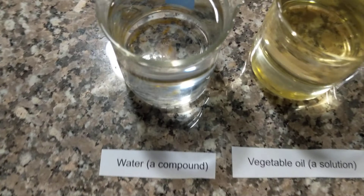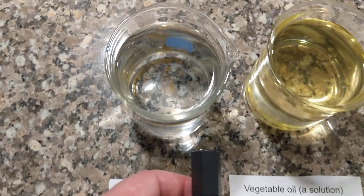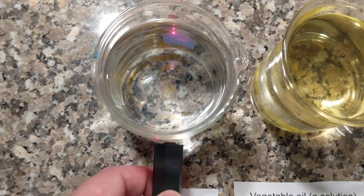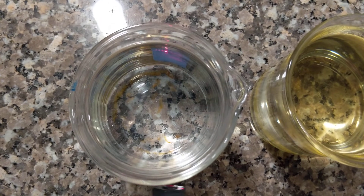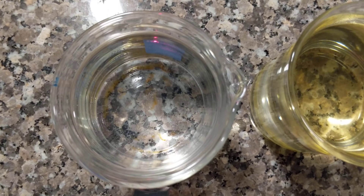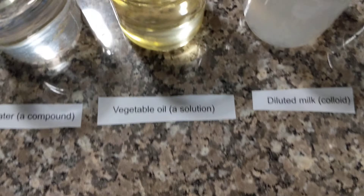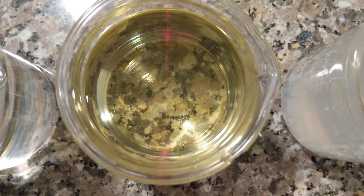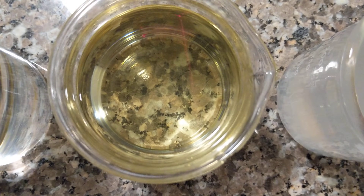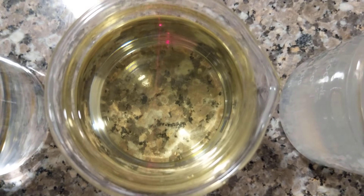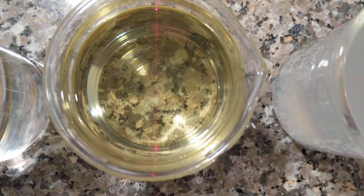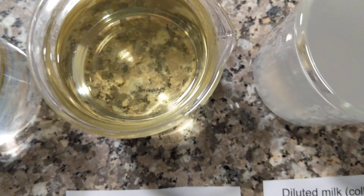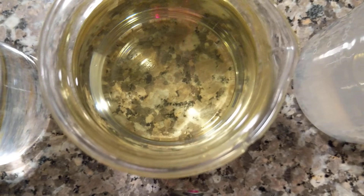I'm going to take the laser pointer and let's look at water. If you look at water, you'll see that you can kind of see the reflections on the glass, but other than that, you can't see the beam passing through it. Now for the vegetable oil, you can just barely see that beam passing through it — really not visible. I have the lights down in here just so you can kind of see that beam, but not really that visible.